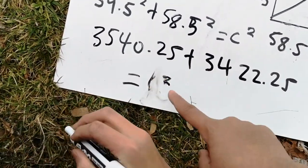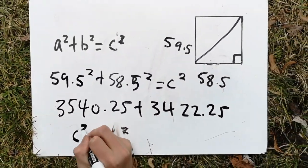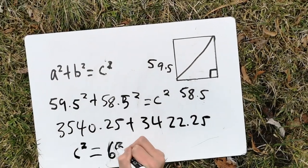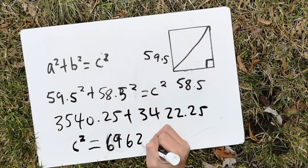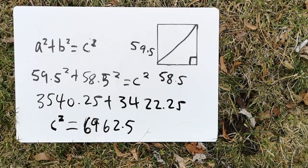Let's write, since that would be a big number, let's write the c squared over here, Max. Okay. Now, that would equal to 6962.5. Big number.